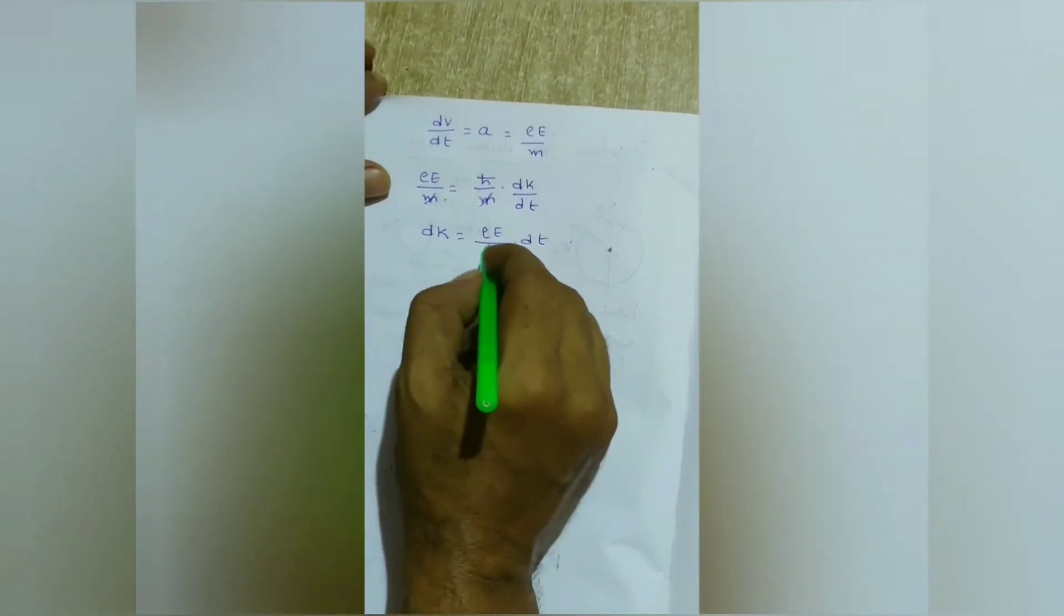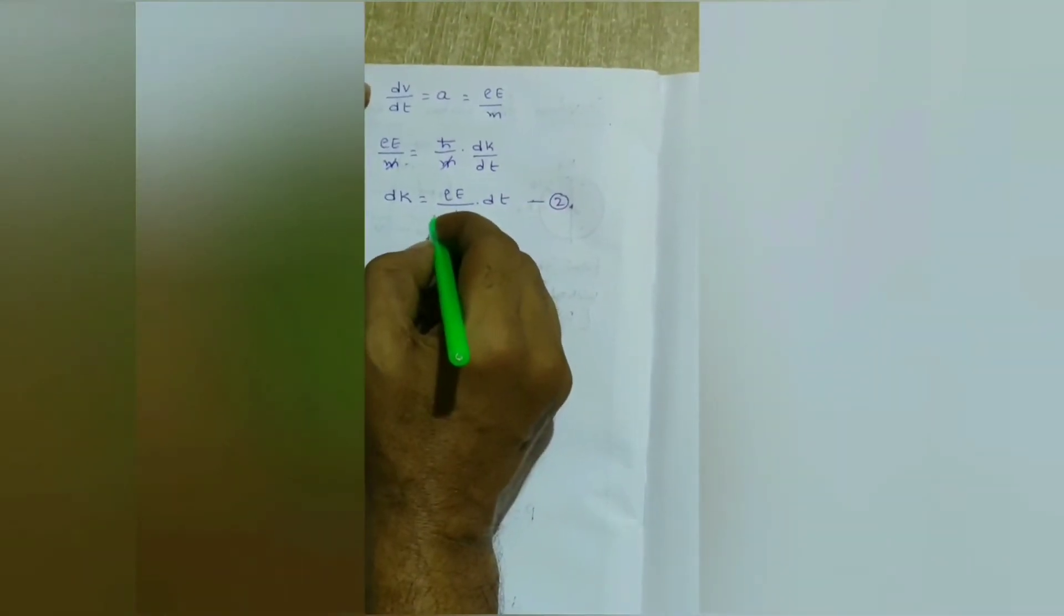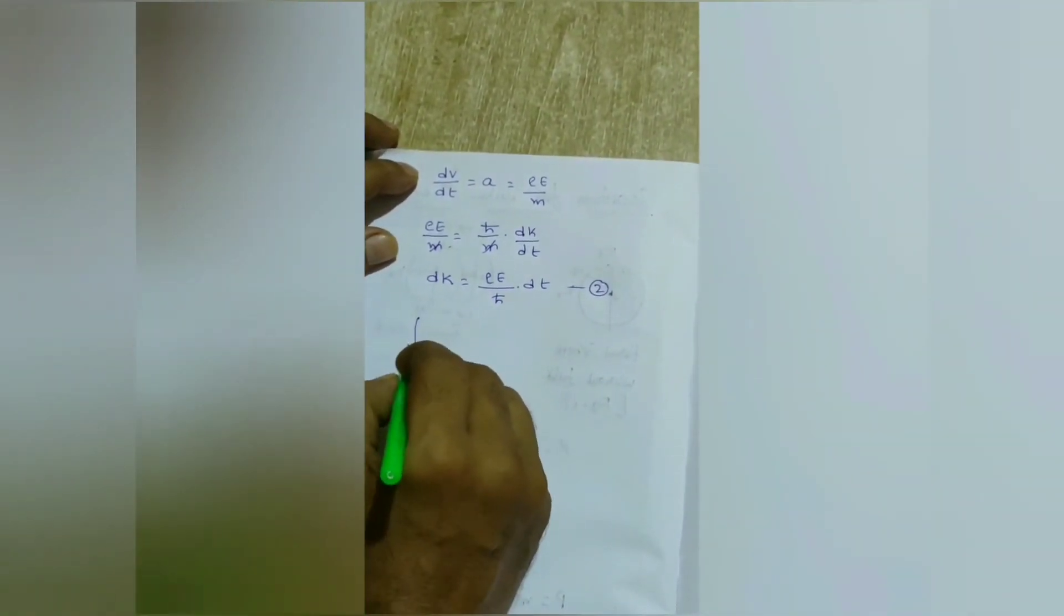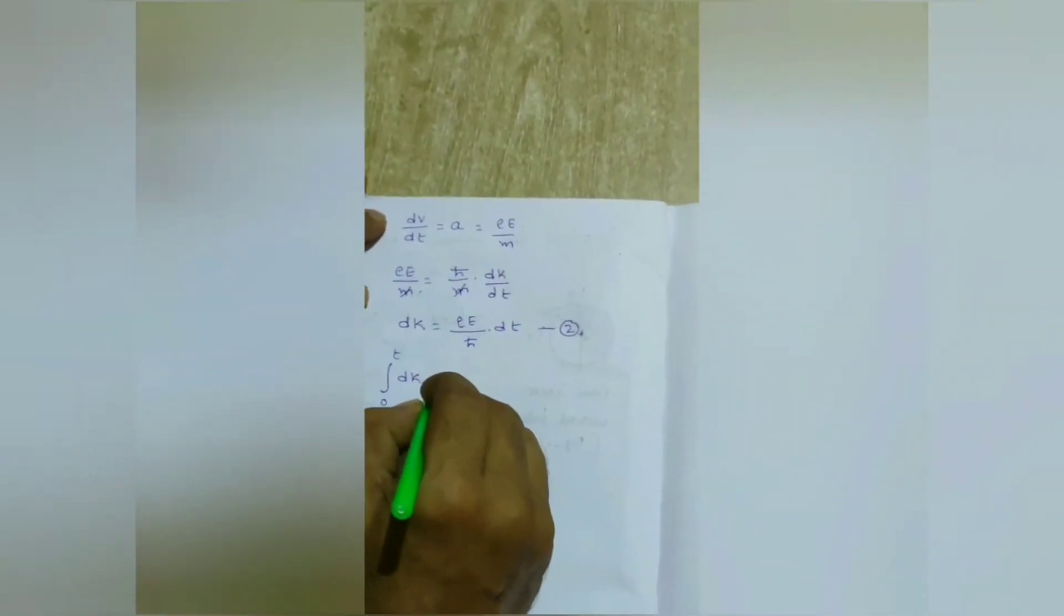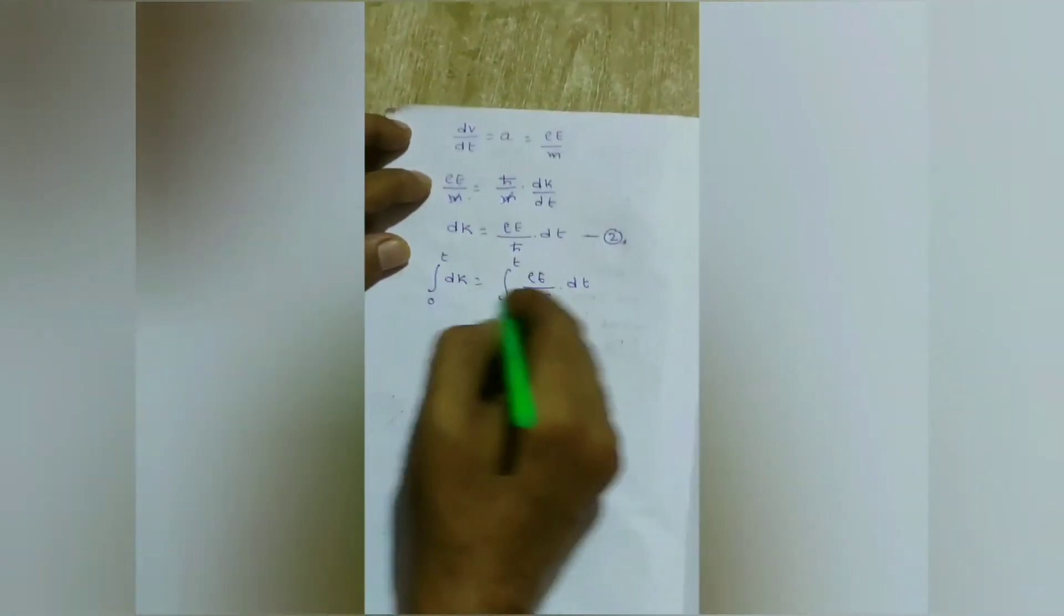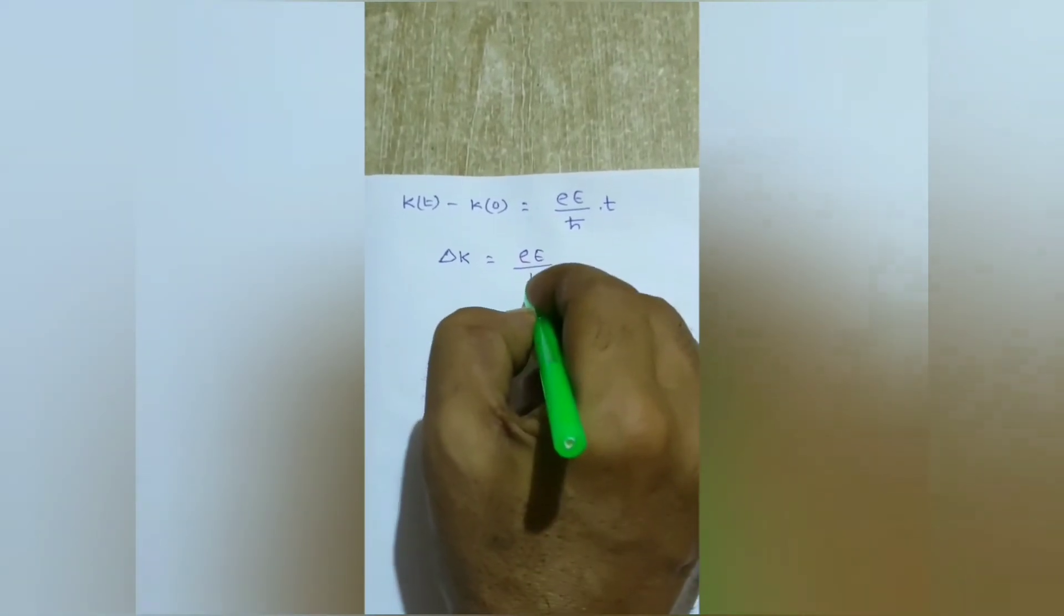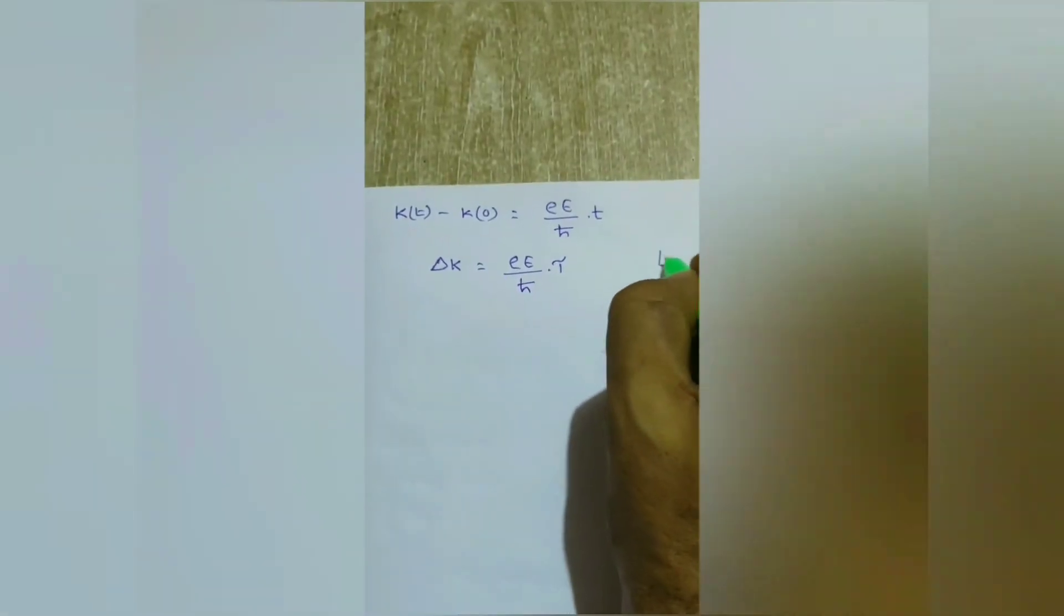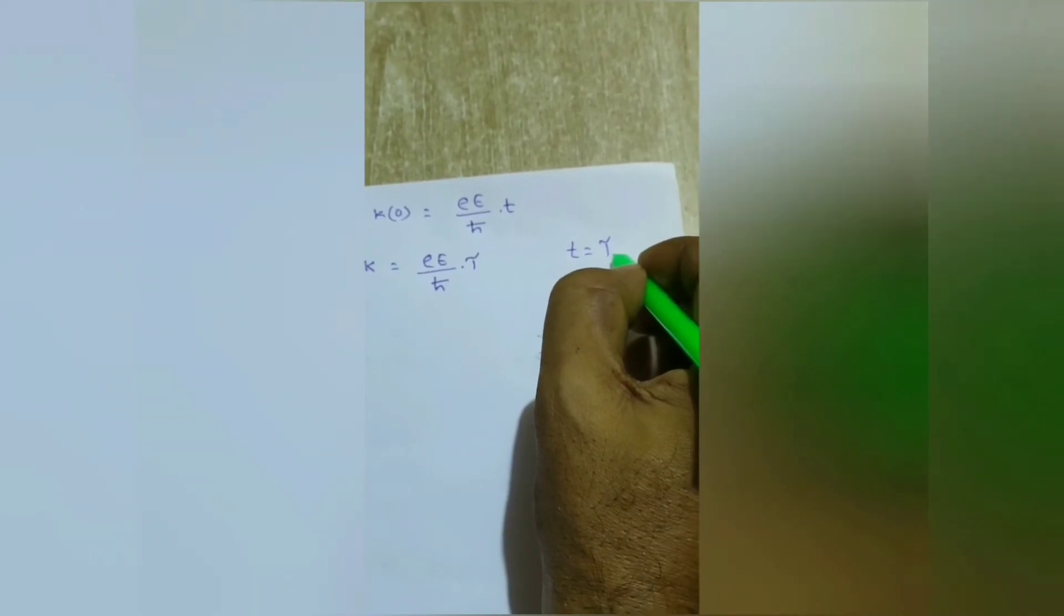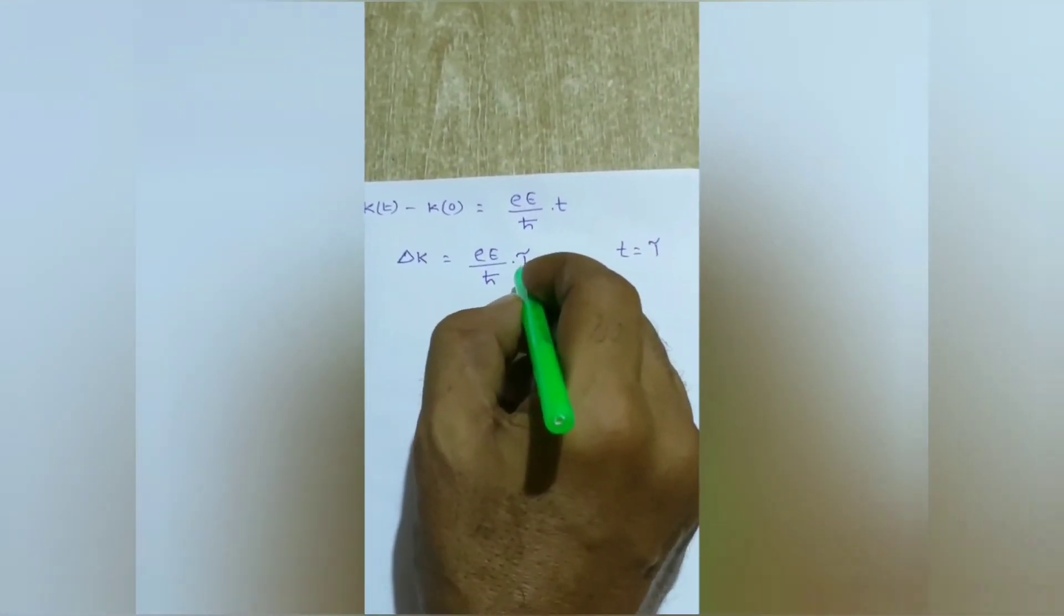This is equation 2. Integrating equation 2 from 0 to t, we get ∫dk = ∫(eE/ℏ) dt. k_t - k_0 = Δk = (eE/ℏ)τ, because t = τ. Now, τ is nothing but mean collision time, the mean time spent between two successive collisions. Therefore, Δk = (eE/ℏ)τ.